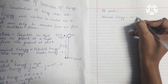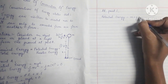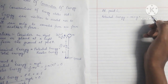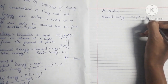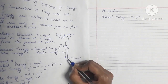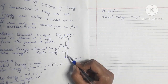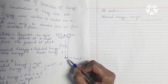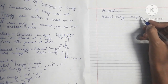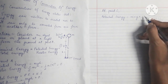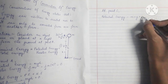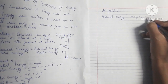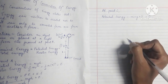At point C, potential energy = m × g × height from ground. Since point C is at ground level, the height of the object is zero. Therefore, potential energy at C = m × g × 0 = 0.